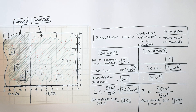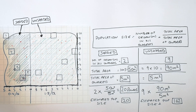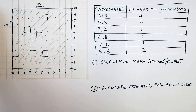It is only an estimated population size. More reliable results come from using more quadrat coordinates to get a more accurate mean. Pause the video here to use the data provided to calculate the mean flowers per quadrat and the estimated population size. The method and answers will follow.